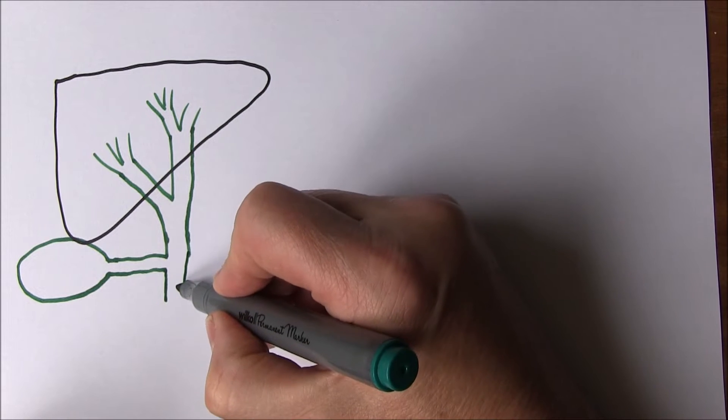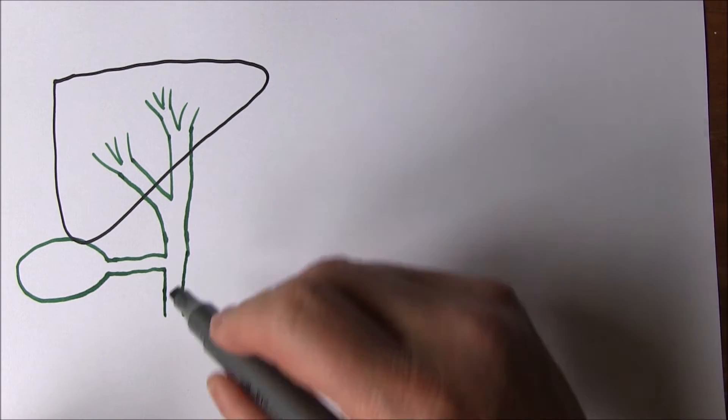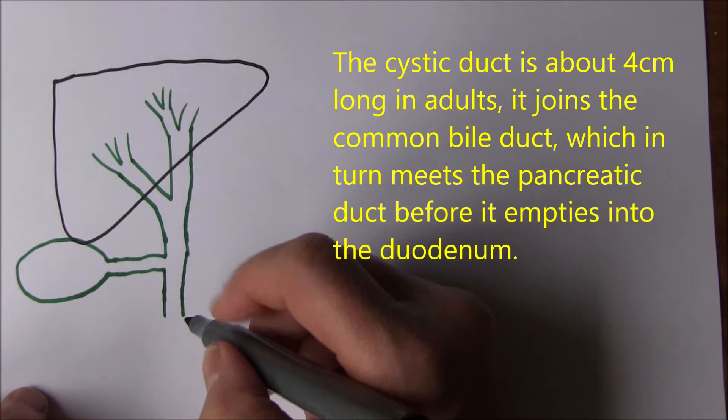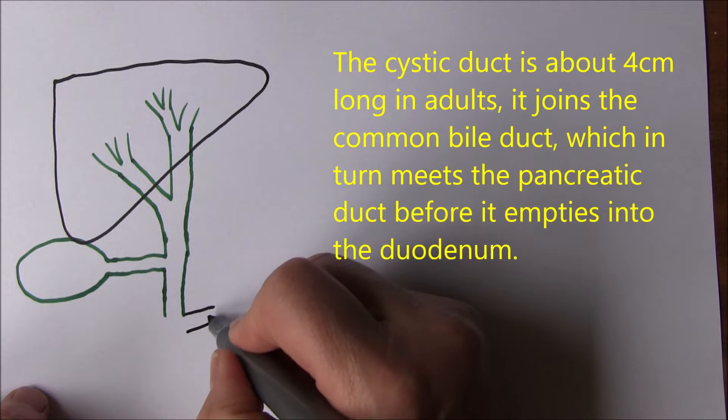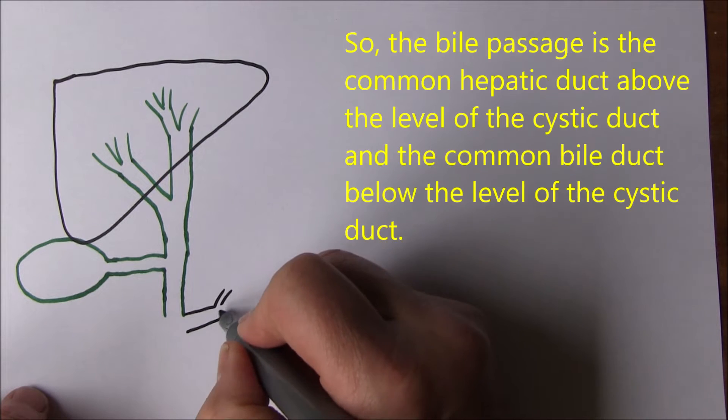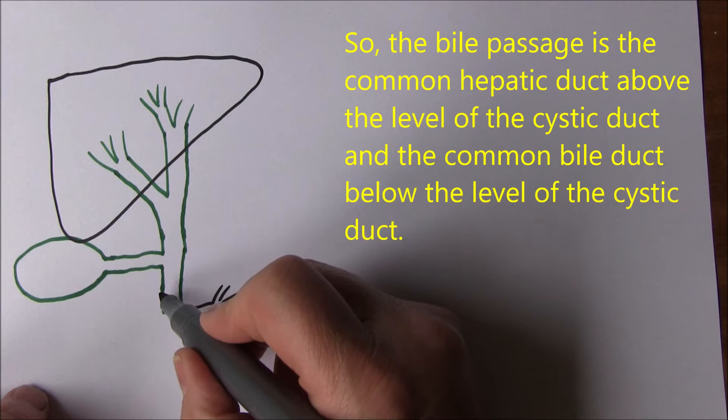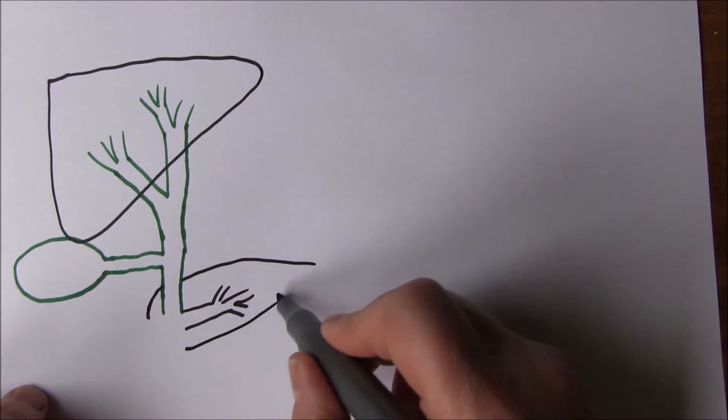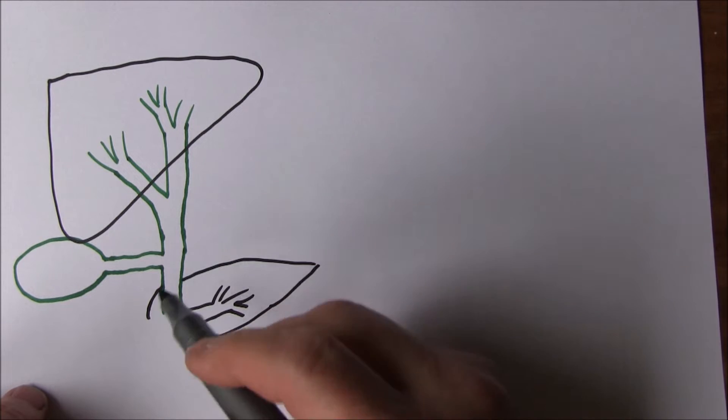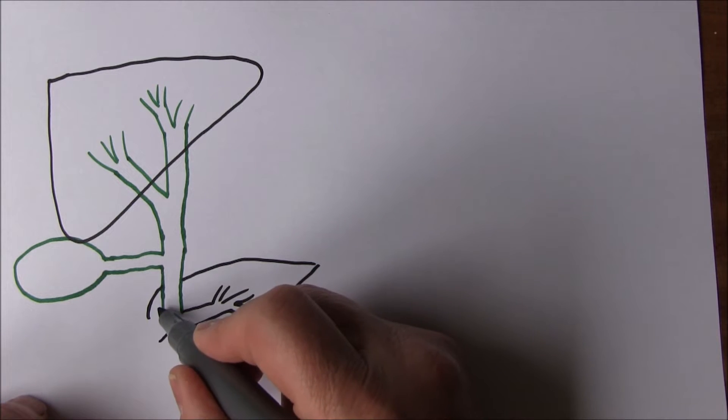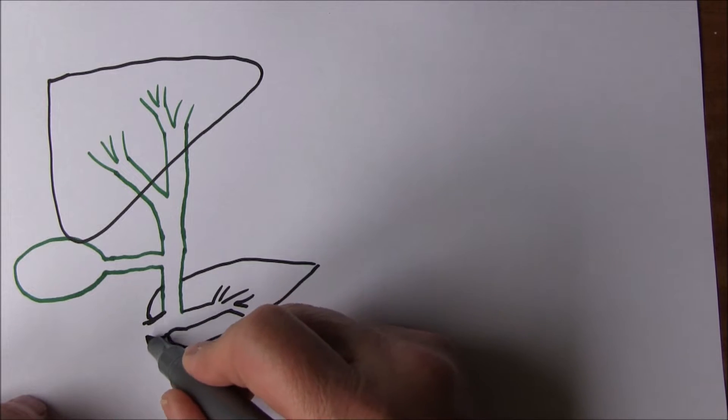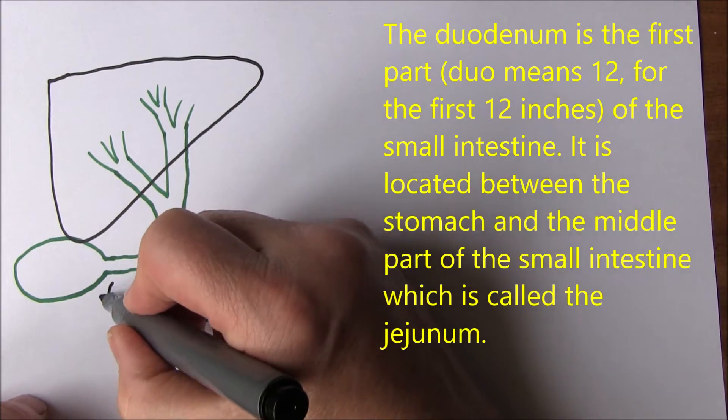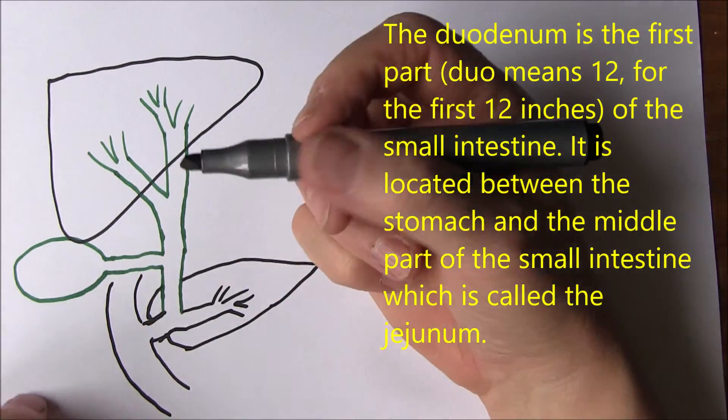After that, the bile duct becomes what's called the common bile duct, and that's actually going to join up with a duct from the pancreas further down here, the pancreatic duct. The common bile duct is actually going through the tissue of the pancreas, and this joins the duodenum, which is curving around here.